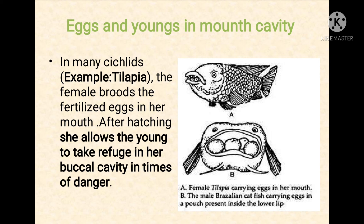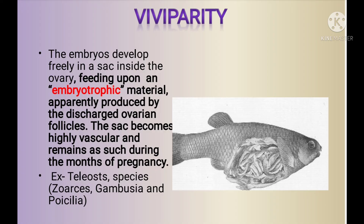The next pattern of parental care in fishes is viviparity. The embryo develops freely inside the ovary by feeding upon embryotrophic material produced by the discharged ovarian follicle. The sac becomes highly vascular and remains so during the period of pregnancy. This is shown by teleosts.